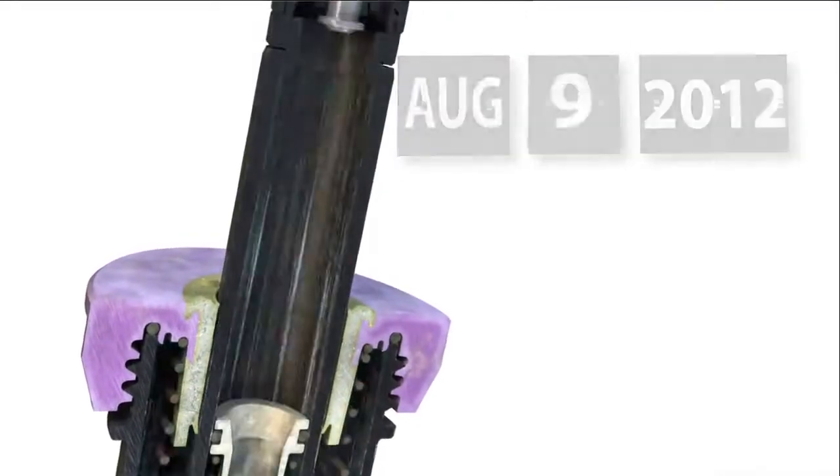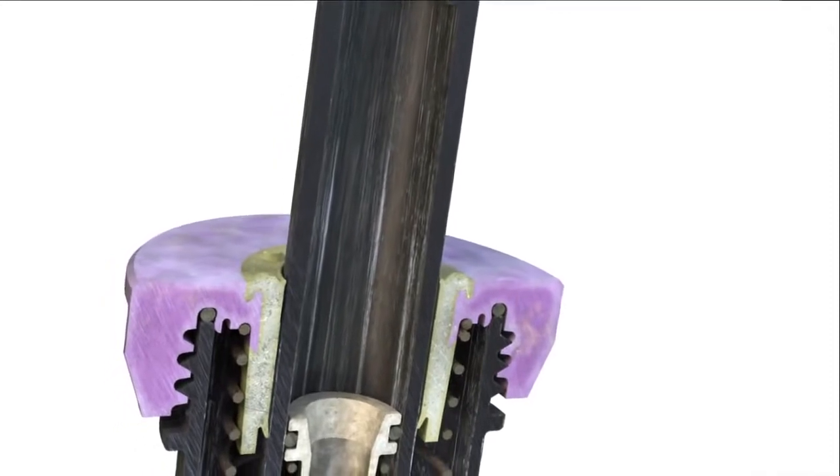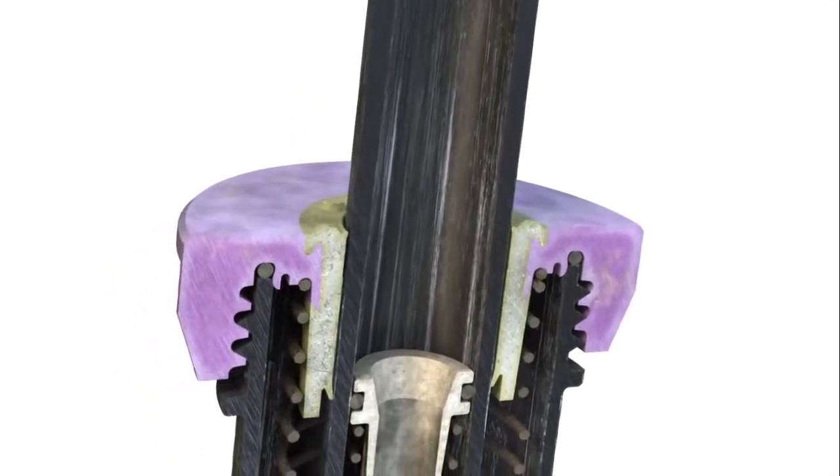With normal sprays, grit and filth slowly build up between the stem and wiper seal. This grit acts like sandpaper, and over time, grinds up the surface of the wiper seal and stem.